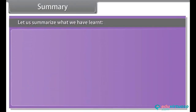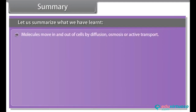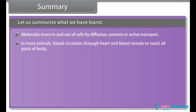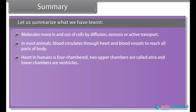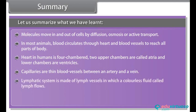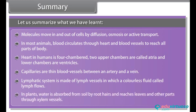Let us summarize what we have learned. Molecules move in and out of cells by diffusion, osmosis or active transport. In most animals, blood circulates through the heart and blood vessels to reach all parts of the body. The heart in humans is four-chambered: two upper chambers called atria and two lower chambers called ventricles. Capillaries are thin blood vessels between an artery and a vein. The lymphatic system is made of lymph vessels in which a colorless fluid called lymph flows. In plants, water is absorbed from the soil by root hairs and reaches leaves and other parts through xylem vessels.